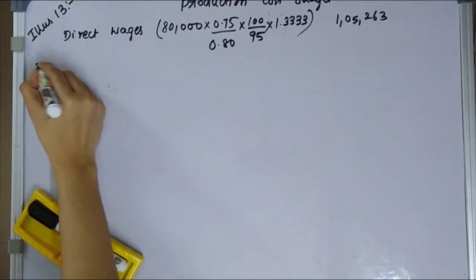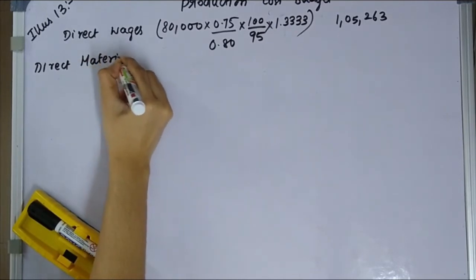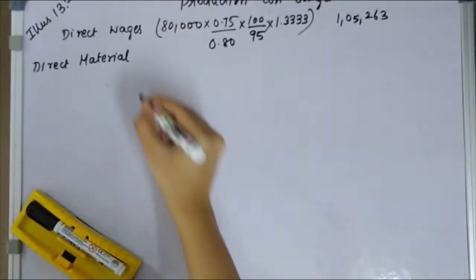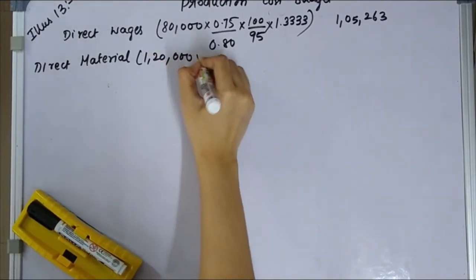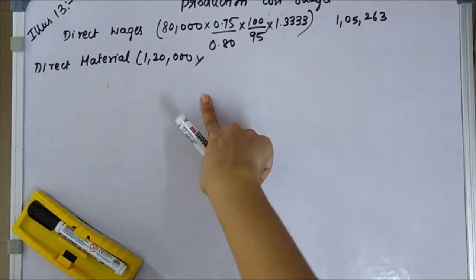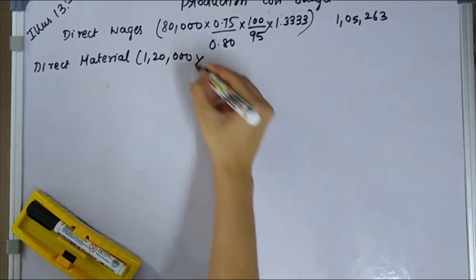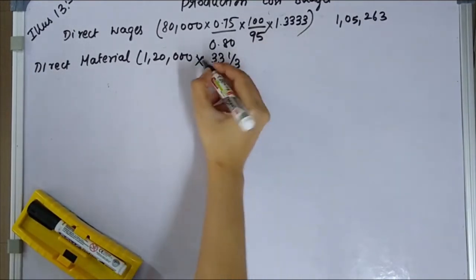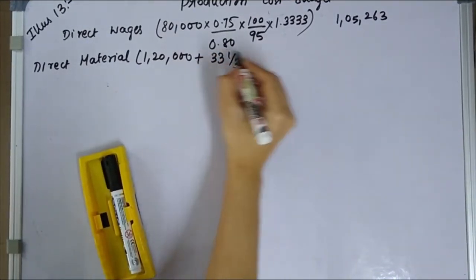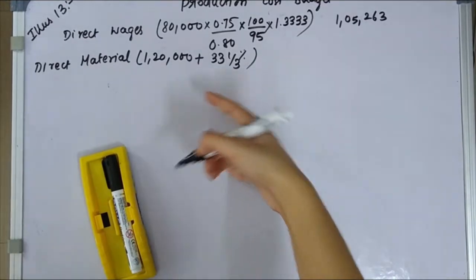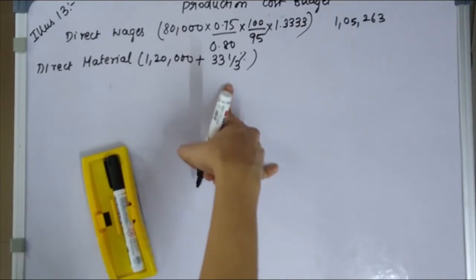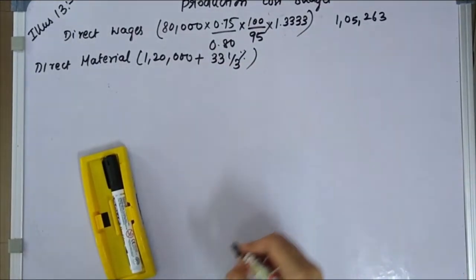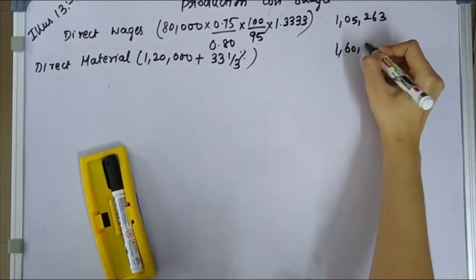Next, direct material: 1,20,000. Since production increases by 33⅓%, direct material will also increase by 33⅓%. So 1,20,000 with a 33⅓% increase gives us 1,60,000 for direct material in the upcoming year.